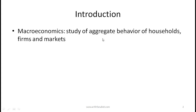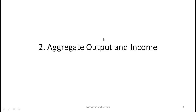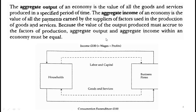The first topic we cover here is the concept of aggregate output and income. When we talk about the aggregate output of an economy, it is the value of all goods and services produced in a specific period of time. The aggregate income of an economy is the value of all payments earned by the suppliers of factors used in production of goods and services.